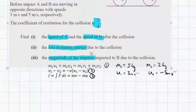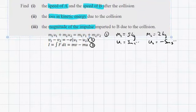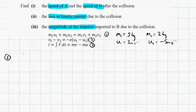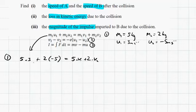So the first part, we need to work out the speed of A and the speed of B. In order to do this, we're going to be using equations 1 and 2, and we're going to end up with simultaneous equations. First, from equation 1, we know that m1 u1 plus m2 u2 equals m1 v1 plus m2 v2. So 5 times 3 plus 2 times minus 5, the signs are really important, very easy to make mistakes with them.